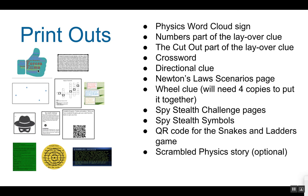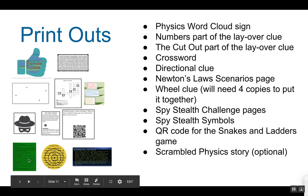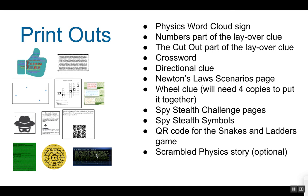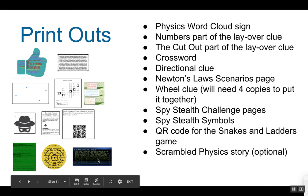What you need to print out: the word cloud, which goes inside the big box; the numbers layover clue; the cutout layover clue — use a hole punch to punch out those circles; the crossword puzzle; the directional clue, which is full of net force problems; the spy stealth symbols; the spy stealth challenge sheets; and the QR code, which leads them to the snakes and ladders game on the iPad. You also need the Newton's laws scenarios page, and you need to print four copies of the wheel clue in order to make the actual clue. If you decide not to use the iPad for the story video introduction, you can always print that slide from the Google Drive PowerPoint.